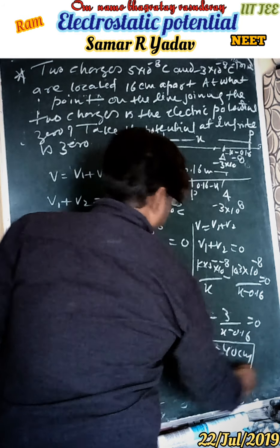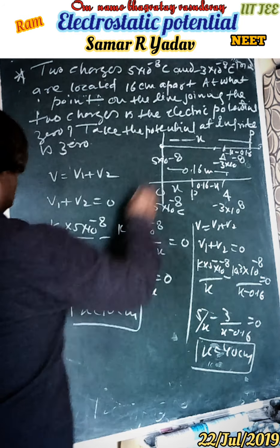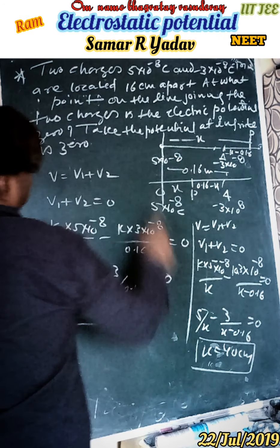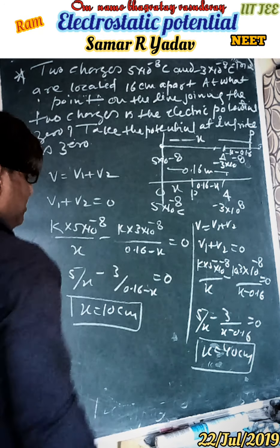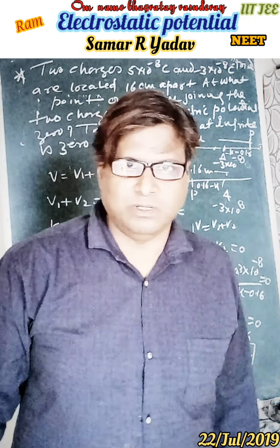Therefore x is equal to 40 cm. This is the distance from the charge of 5 times 10 to the power minus 8 Coulombs.